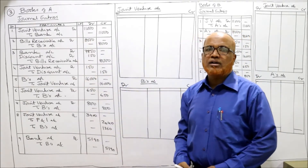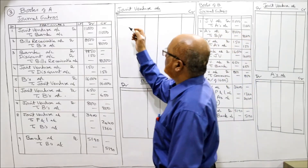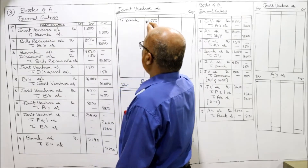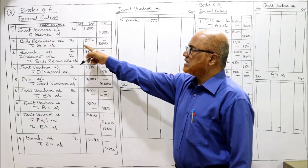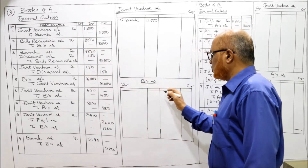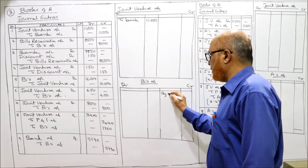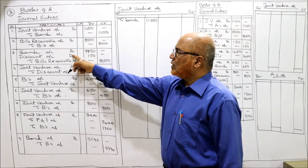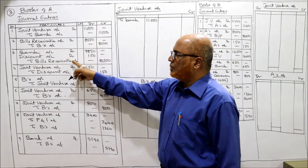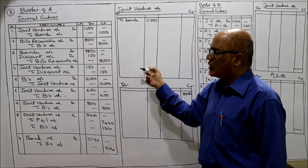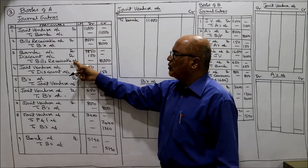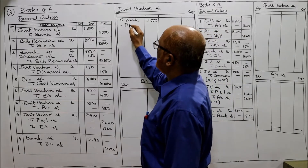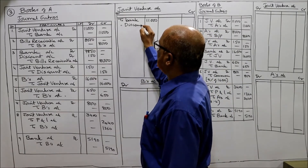Now we post the journal entries to the ledger accounts. First entry: Joint Venture Account Dr. to Bank - 11,000. Then Bills Receivable Account Dr. to B's Account - B's account is credited 8,000. For the bank and discount entries, we don't have separate bank, discount, or bills receivable accounts, so no posting there. Joint Venture Account Dr. to Discount - joint venture account debit side 150.